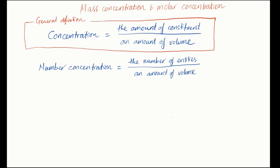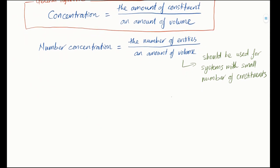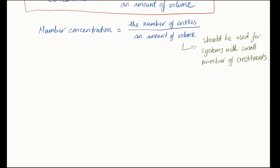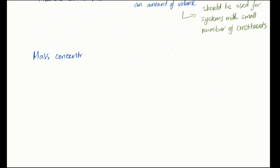But that's only applicable for a system with a very small number of constituents. In practice in chemistry, that is usually not the case because you usually will be dealing with a very large number of entities. So you will more often be using mass and molar concentration instead.